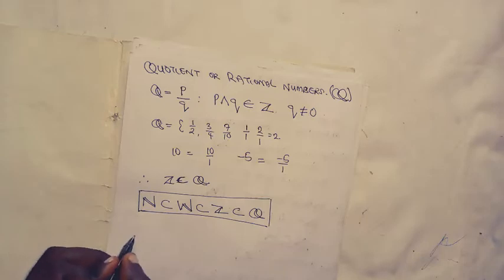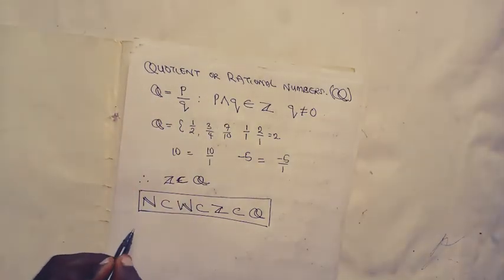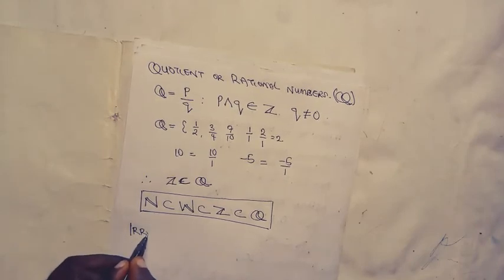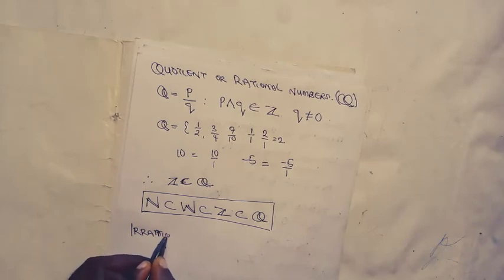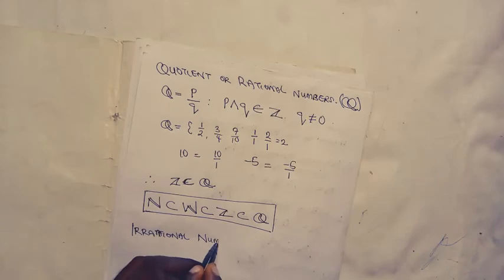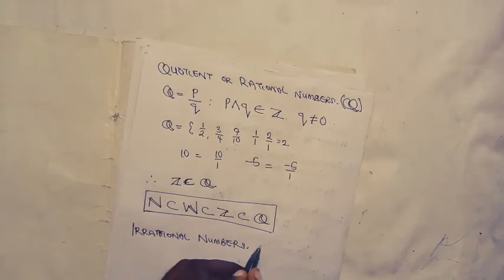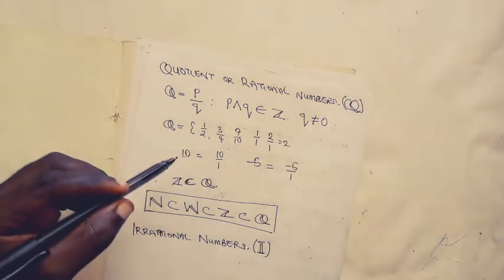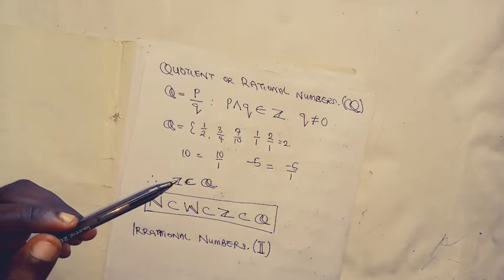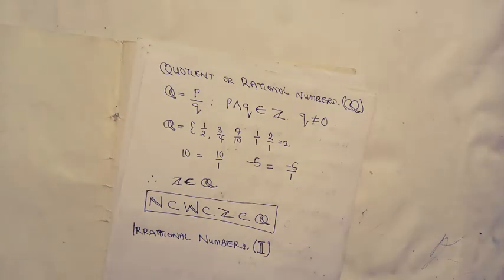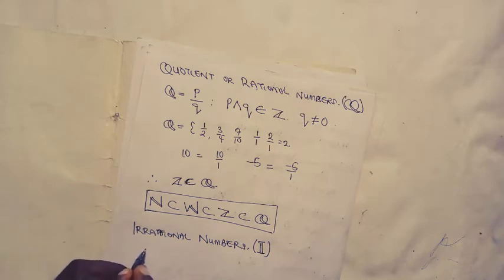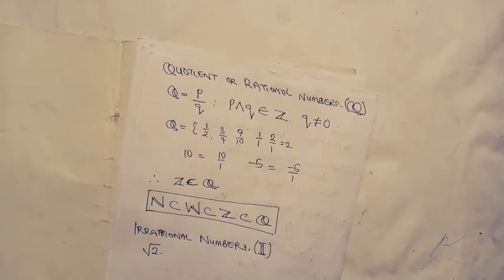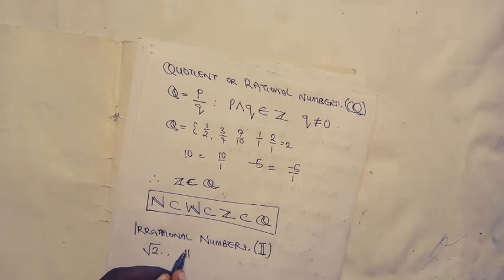Now there is a set of numbers that does not belong to the quotient numbers, and we call those the irrational numbers, represented as I. Irrational numbers cannot be represented as exact fractions — they are non-terminating, non-repeating decimals. For example, we have the square root of 2, which is an irrational number, and we have pi.